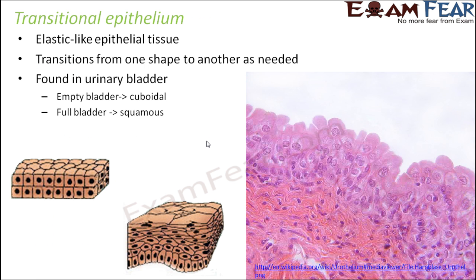Now let us talk about transitional epithelium. Transitional epithelium is very interesting. Transition means change — whenever something changes from one form to another, a transition has happened. There are some epithelium which are elastic in nature and can change their shape, performing a transition from one shape to another as and when required. Such tissue is known as transitional epithelium.